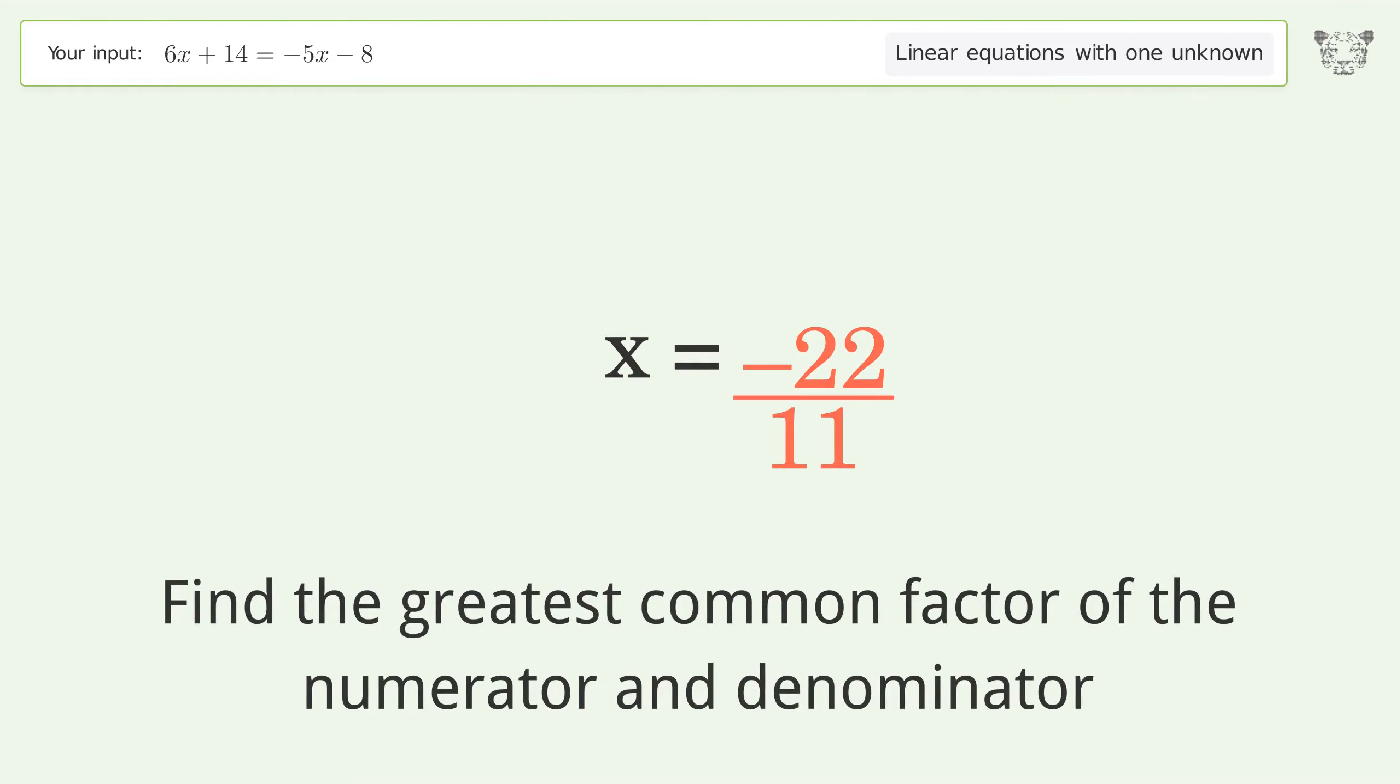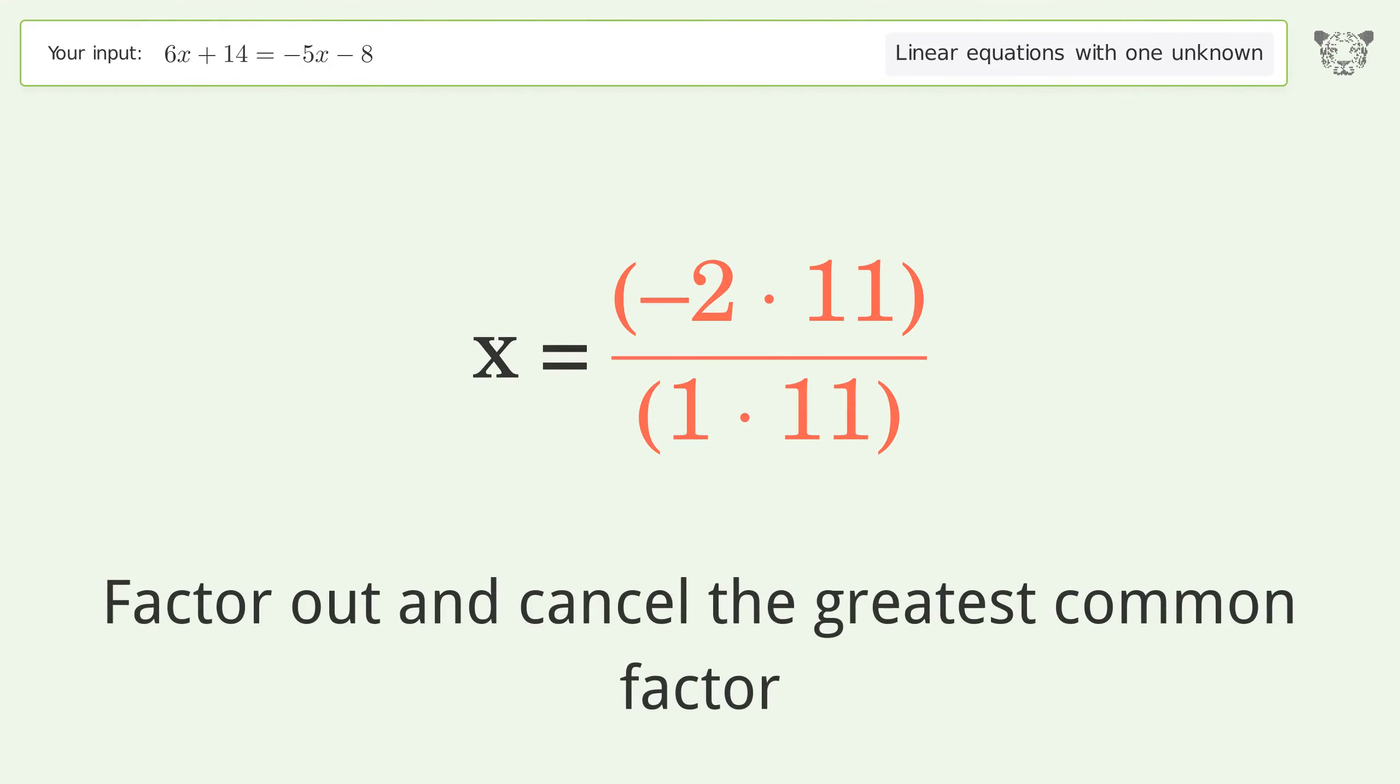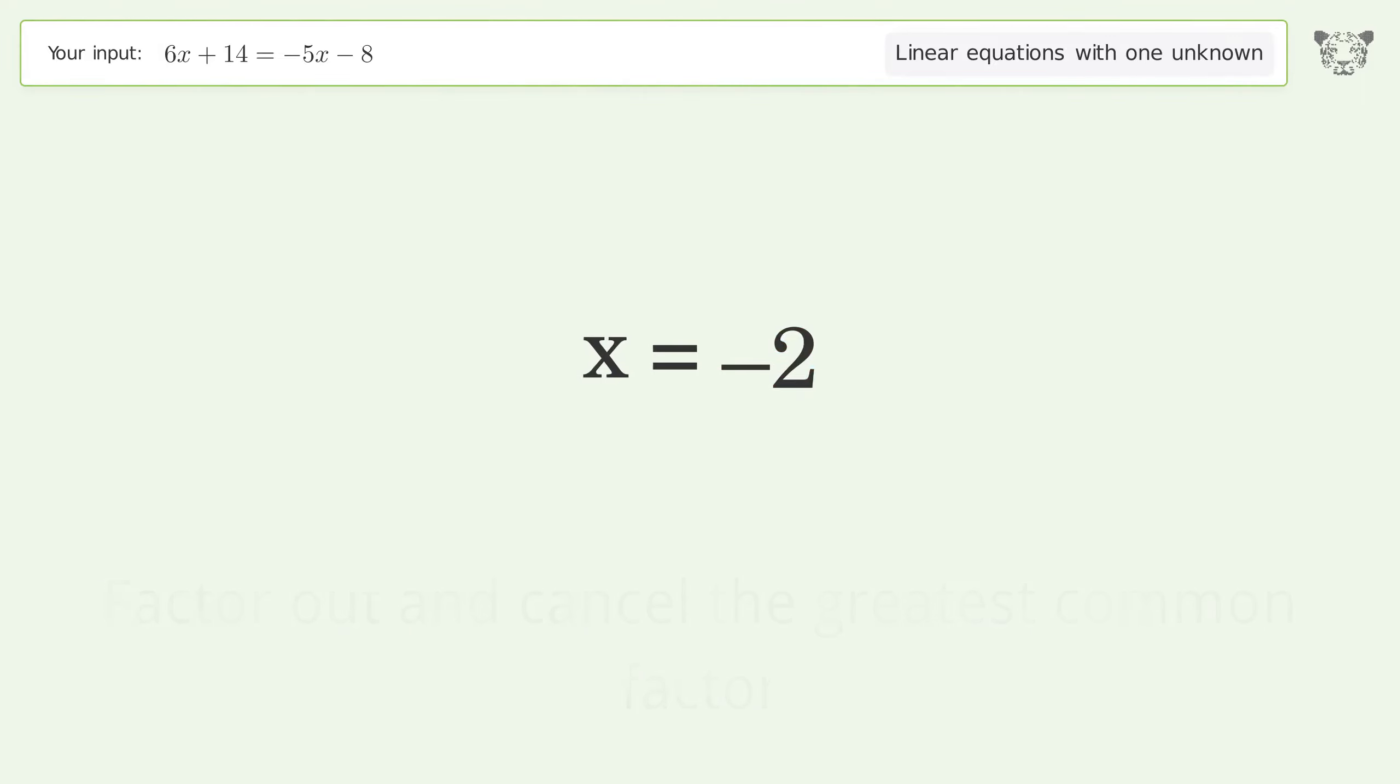Find the greatest common factor of the numerator and denominator. Factor out and cancel the greatest common factor. And so the final result is x equals negative 2.